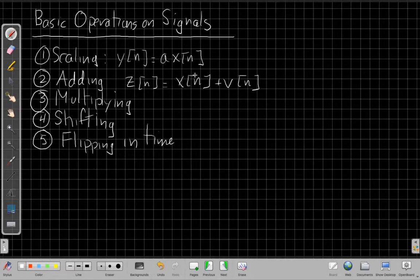And the way either one of these would work is you can, in theory, just plug in one value of n at a time. So you can just plug in when n equals zero, y[0] will be equal to a times x[0]. When n equals one, and I'll show an example of this in a minute, a times x[1]. Same thing, I want to find z at time two, I take x at time two and add v at time two.